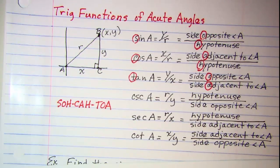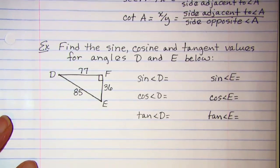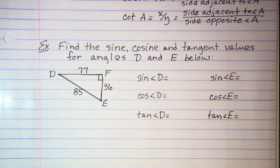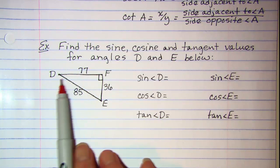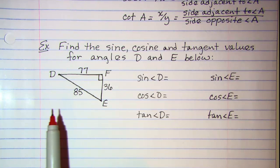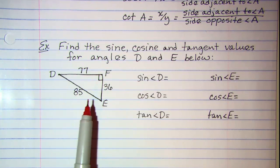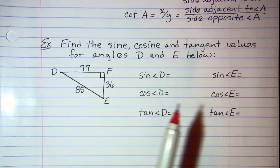Now let's do a problem. Find the sine, cosine, and tangent values for angles D and E below. And so notice we have a triangle drawn. It's a right triangle. We don't have it graphed in a coordinate plane. So we don't have any idea about X, Y, and R values. So we're going to have to use our SOHCAHTOA definitions.